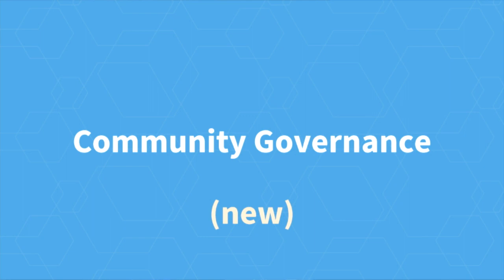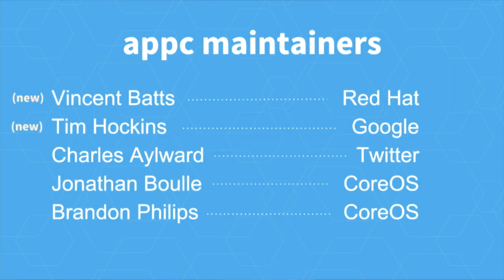The next thing I'd like to announce is around community governance. To have a shared standard, we need neutral governance. The goal is for App Container not to be a CoreOS thing but a community thing. So I'd like to announce some new maintainers: Vincent Batts from Red Hat is joining as a maintainer — Red Hat has been a major contributor to the container ecosystem. Tim Hockin from Google — Google has the largest container deployment in the world and his influence will help ensure we're building a great shared standard. Charles is one of the early outside maintainers, and I'd like to thank him for his early support. Jonathan, our lead on Rocket, and Brandon our CTO continue to heavily contribute.